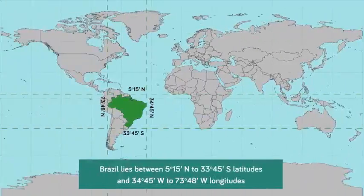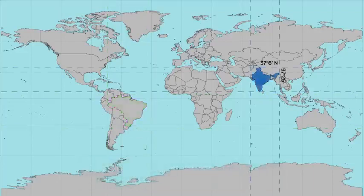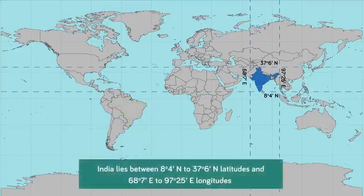Mainland Brazil lies between 5 degrees 15 north to 33 degrees 45 south latitudes and 34 degrees 45 west to 73 degrees 48 west longitudes. Mainland India lies between 8 degrees 4 north to 37 degrees 6 north latitudes and 68 degrees 7 east to 97 degrees 25 east longitudes.